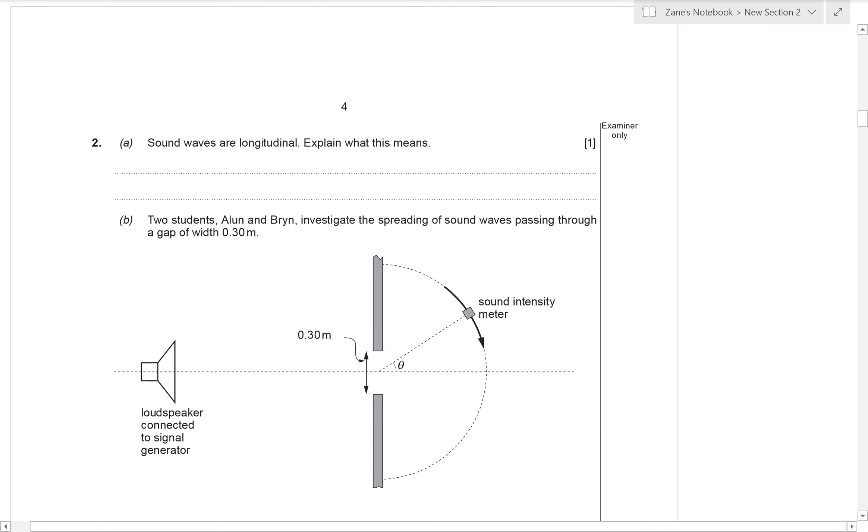Hello, today we're going to look at question 2 from the January 2014 WJC Unit 2 A Level Physics paper. The first question asks us what are longitudinal waves? So longitudinal waves are waves in which the vibrations are parallel to the direction a wave travels.